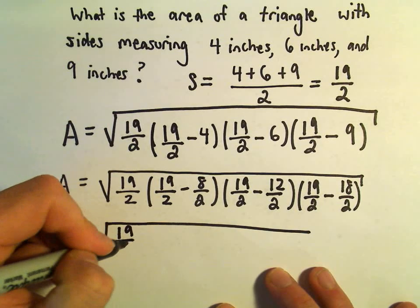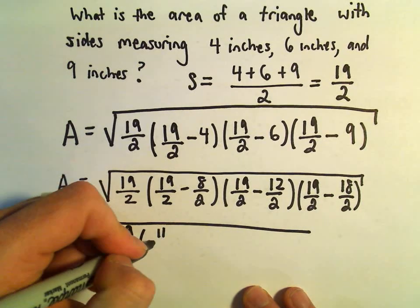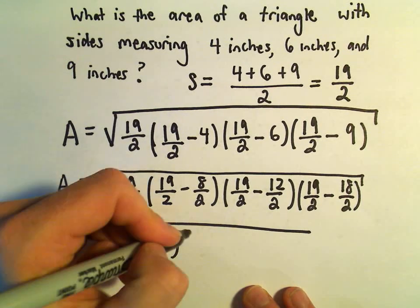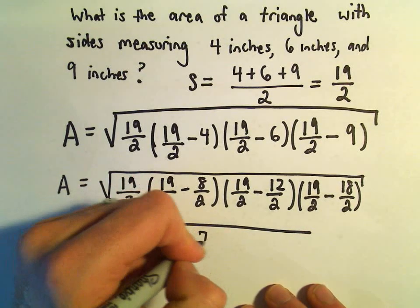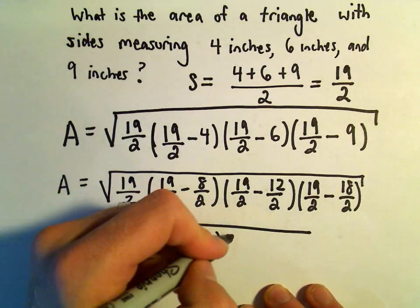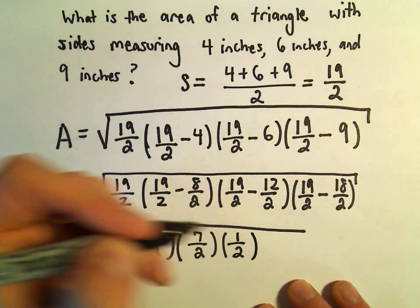So let's see, we've got 19 over 2. Let's see, I guess 19 minus 8, that would be 11 over 2. Let's see, 19 minus 12, that would give us 7 over 2. And then 19 minus 18, that would give us 1 over 2.